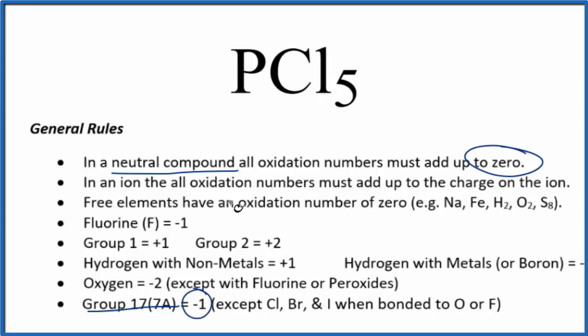Phosphorus isn't an exception. So each chlorine atom has an oxidation number of negative 1. Since we have 5 of them, 5 times negative 1, this will give us a negative 5.